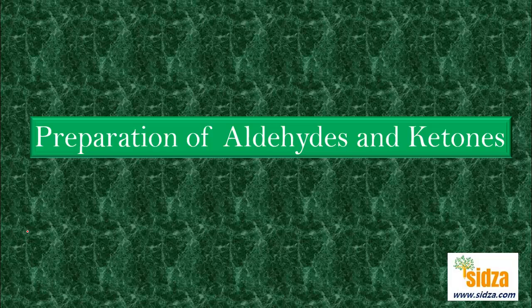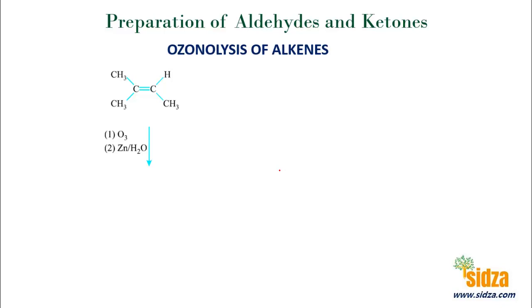Preparation of aldehydes and ketones — we will discuss the different methods of preparing aldehydes and ketones. Aldehydes and ketones can be prepared by the ozonolysis of alkenes, a very famous reaction. In the ozonolysis of alkenes, we first react the alkene with ozone and then do a reduction. This is a two-step process. You get an aldehyde or a ketone, or both, depending on the substitution around the carbon-carbon double bond.